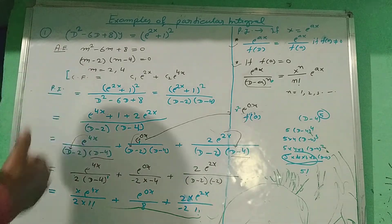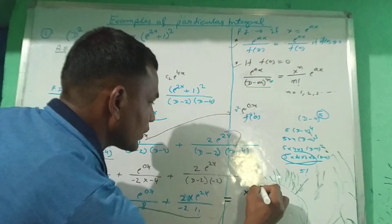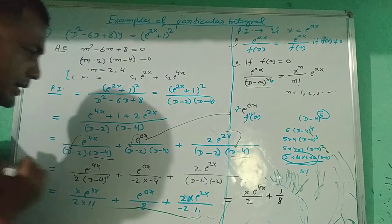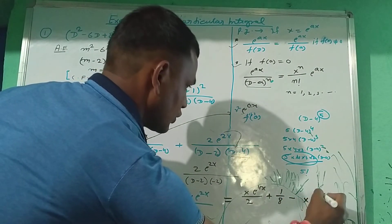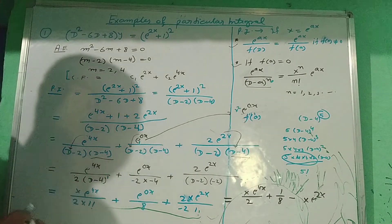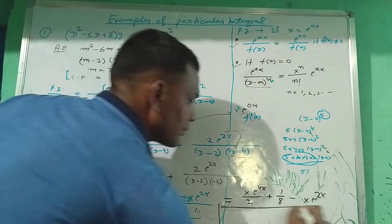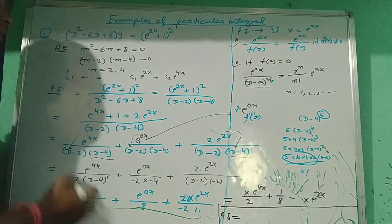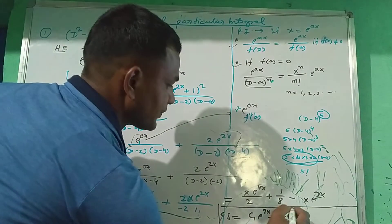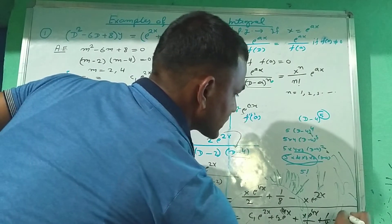So we can write the particular integral as: x·e^(4x)/2 plus 1/8 minus x·e^(2x). The complete solution of this differential equation is complementary function plus particular integral: c1·e^(2x) plus c2·e^(4x) plus x·e^(4x)/2 plus 1/8 minus x·e^(2x).